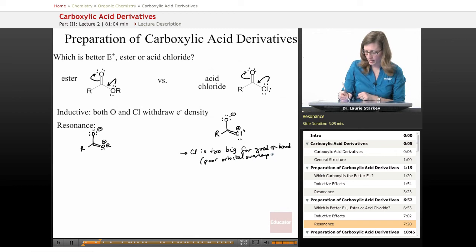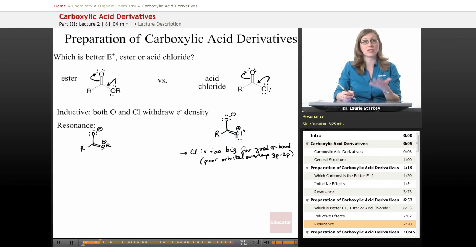We're trying to overlap a 3P orbital with a 2P orbital, and there's not good exchange there. So this pi bond is a very weak bond. That means it's not a very significant contributor to the overall resonance hybrid.